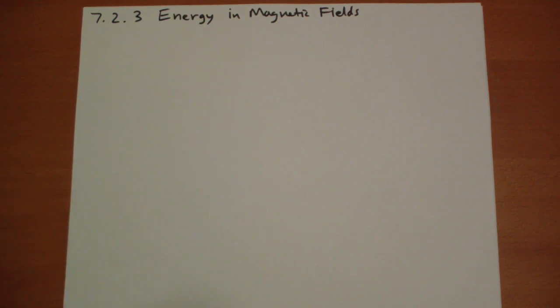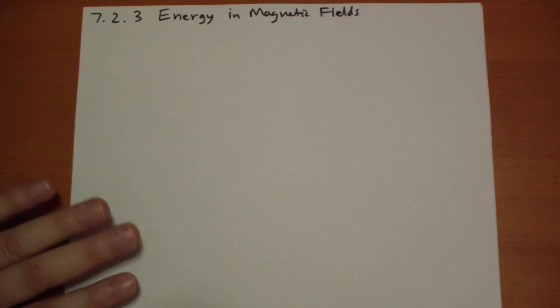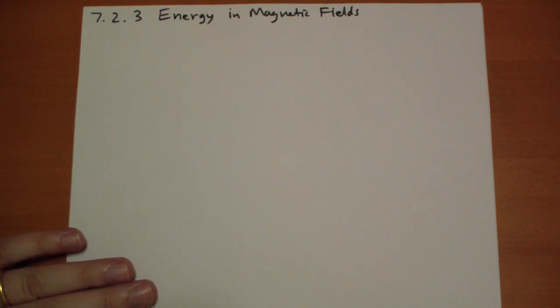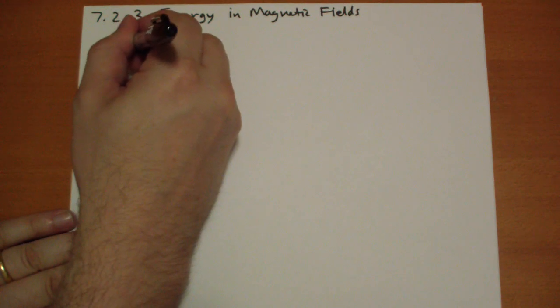So when we have a circuit with inductance, which every circuit does, we can calculate how much work is done to basically bring the current up to I. And so we have this differential equation.